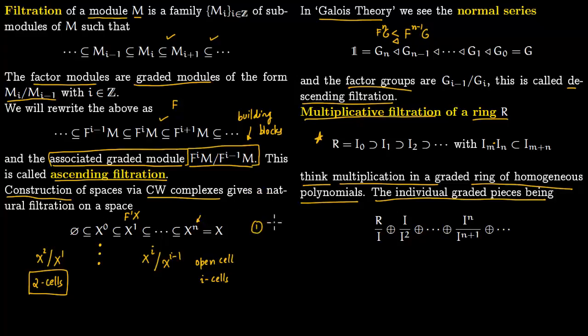We always think of two things. First, you have the sequence - it could be ascending or it could be descending. Number two is the associated graded module. This associated graded module is where you build the individual pieces. These are the building blocks.